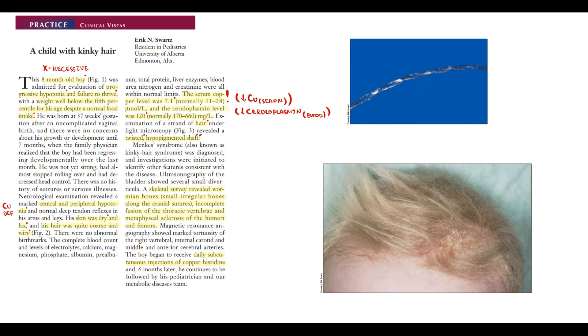And light microscopy revealed a twisted and hypopigmented shaft. Also, he had multiple bone deformities, so the diagnosis of Menkes disease was made. And as treatment, the boy received subcutaneous injections of copper histidine.